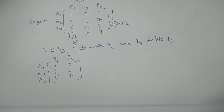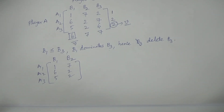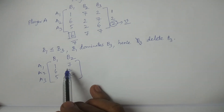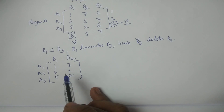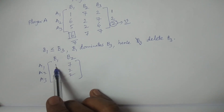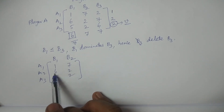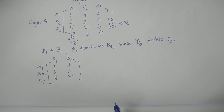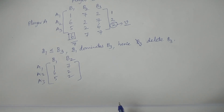Now it is time to compare any two other strategies of one particular player. Comparing B1 and B2 again: 7 greater than 1, 2 less than 6. Therefore for player B, we cannot compare these and we cannot use the dominance property.